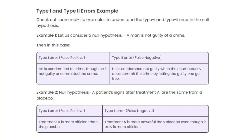Let's look at a real-life example. We consider a null hypothesis that a man is not guilty of a crime. A Type 1 error would be: the judge gives a judgment that the person is a criminal, but in reality, the person was not guilty. The null hypothesis was correct but was rejected — it's like saying it was a bear when it was not actually a bear.